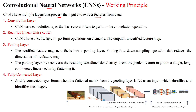The first layer is the convolutional layer, which has several filters to perform the convolution operation. The convolutional layer extracts features from the given input image. The CNN also has a ReLU layer to perform operations on given elements, which is called the Rectified Linear Unit — the activation function.